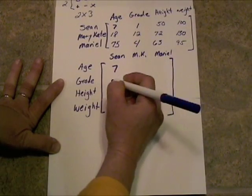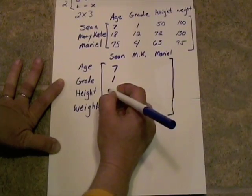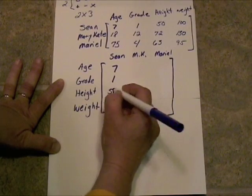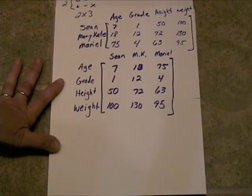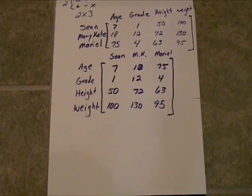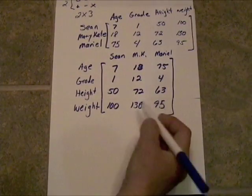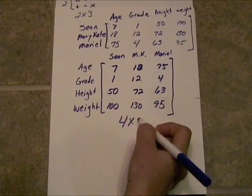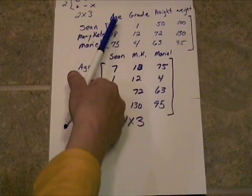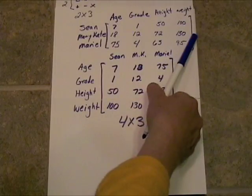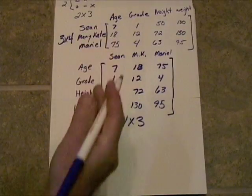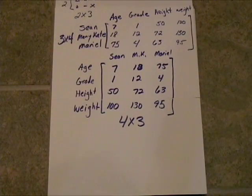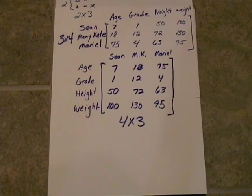Sean's age was 7, his grade was 1st grade, his height was 50, and his weight was 100. So it's a different rectangle. This rectangle is a 4 by 3, whereas the other one was a 3 by 4. Notice we're looking at the exact same data, but it's presented in two different matrices.